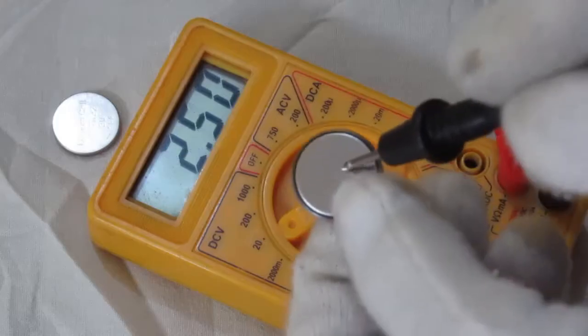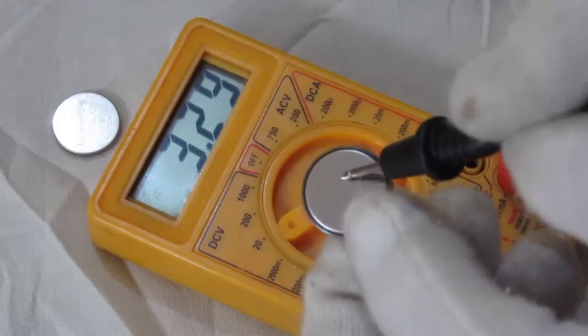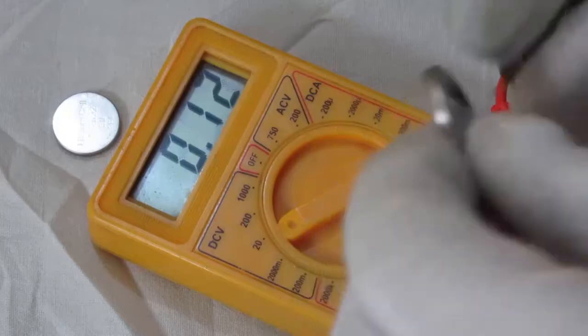The digital multimeter showing 3.29 volt DC. So the battery is working properly.